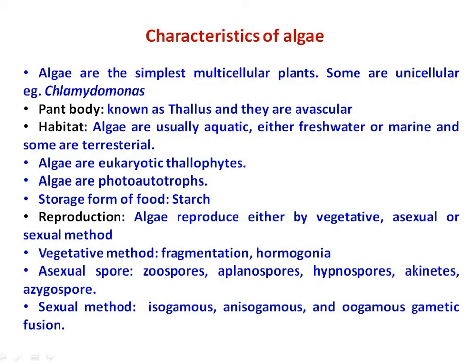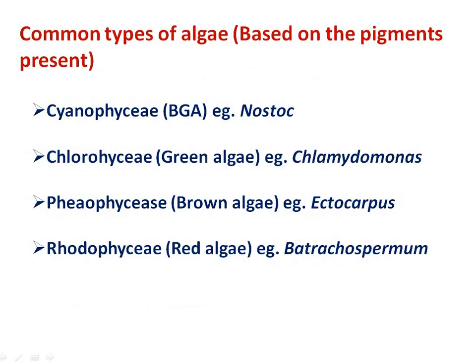The reproduction of algae mainly takes place by three methods: vegetative, asexual, and sexual. Vegetative reproduction takes place by fragmentation and hormogonia. Asexual reproduction takes place by the formation of different types of asexual spores like zoospores, aplanospores, hypnospores, akinetes, and azygospores. Sexual reproduction is of three types: isogamous, anisogamous, and oogamous.